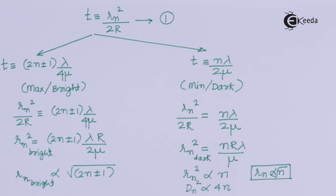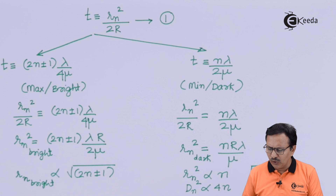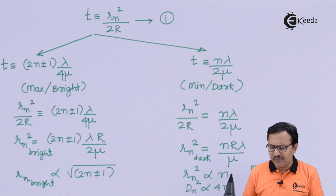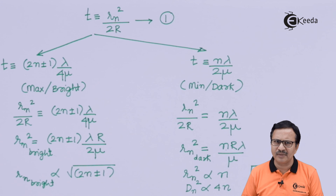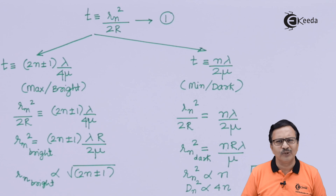Thus, we have obtained an expression for the Nth ring in terms of known parameters: the radius of curvature, the ring number, the wavelength being used, and the refractive index of the medium present between the plano-convex lens and the flat surface. Sincere thanks for watching this video. Stay tuned to eKIDA and do subscribe. Thanks a lot.